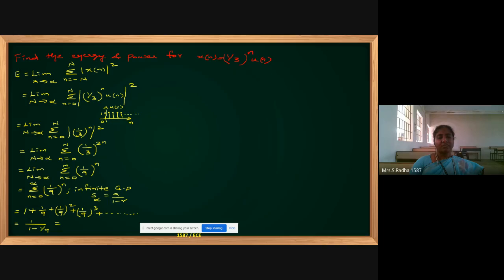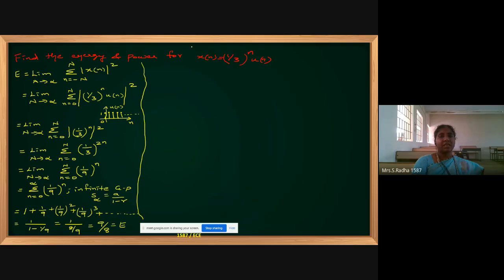The sum of infinite terms equals a/(1−r), where a is the first term and r is the ratio (second term divided by first term). So it becomes 1 divided by (1 − 1/9), which gives 1 divided by 8/9, that is 9/8. The energy value is 9/8 — it is a finite value. Now I will go with the power calculation for this discrete time signal.